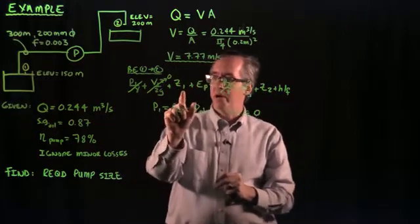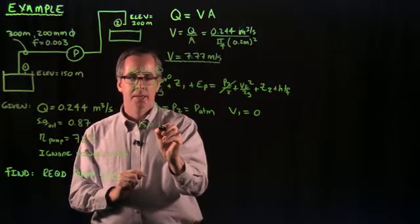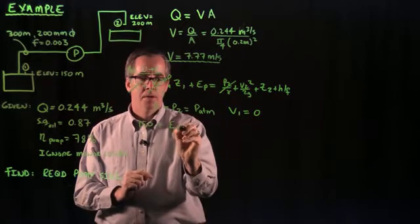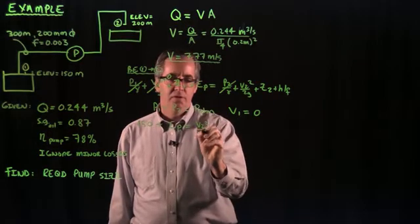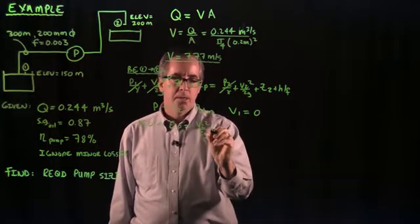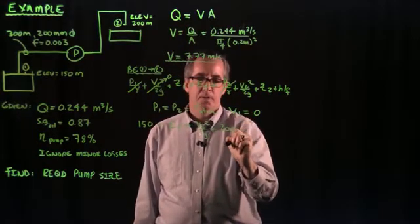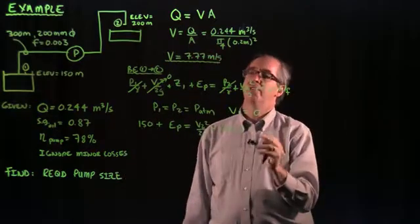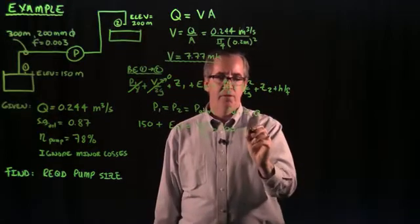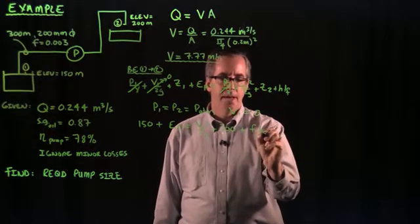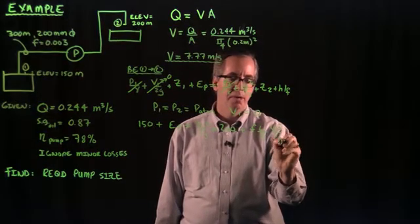Now when I look at the equation, I have z1. Z1 represents the elevation of point 1, that's the 150. So we have 150 plus the pump head on the left-hand side. That has to equal the velocity head, the v2 squared over 2g, plus z2, which we know is 200 meters, plus the head loss due to friction. We're going to use the Darcy-Weisbach equation, which states that the head loss due to friction is the friction factor, the length of the pipe over the diameter of the pipe, and then we have that velocity head, that v2 squared over 2g.